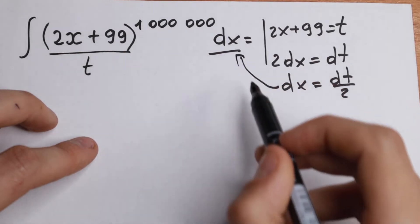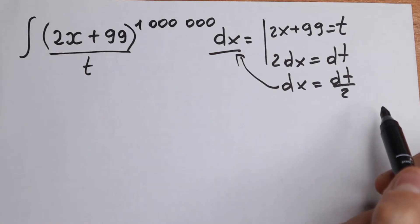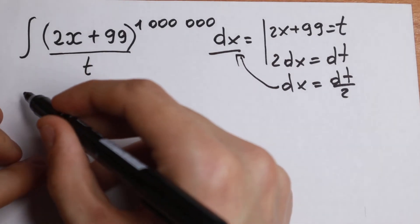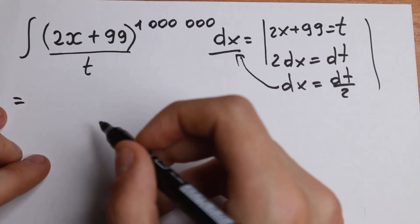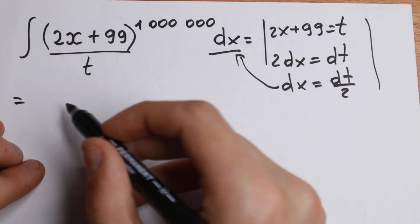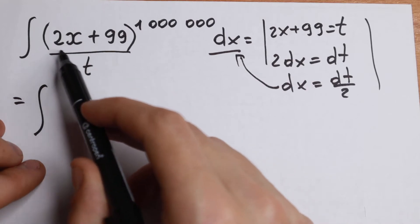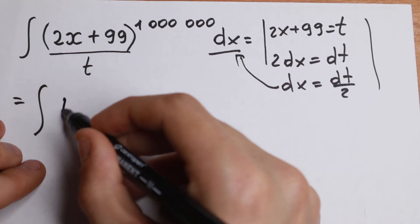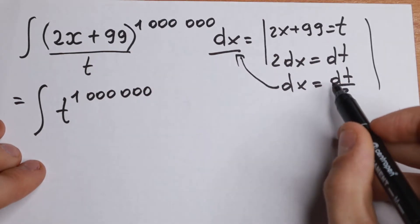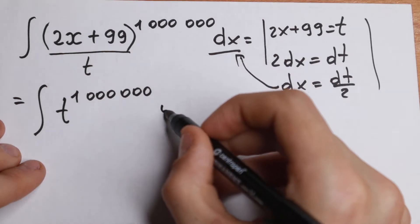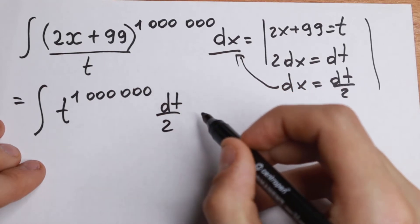So we change this dx by this dt over 2 as well. So we have our integral. Let's use this substitution and rewrite this integral. We will have an interesting case. Integral of (2x + 99), which will be our t to the power of 1,000,000, and dx equals dt over 2.